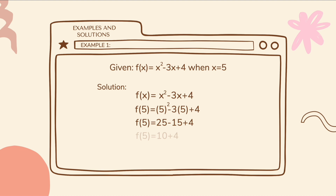25 minus 15 is equal to 10, plus 4 is equal to 14. So our final answer is f of 5 is equal to 14.